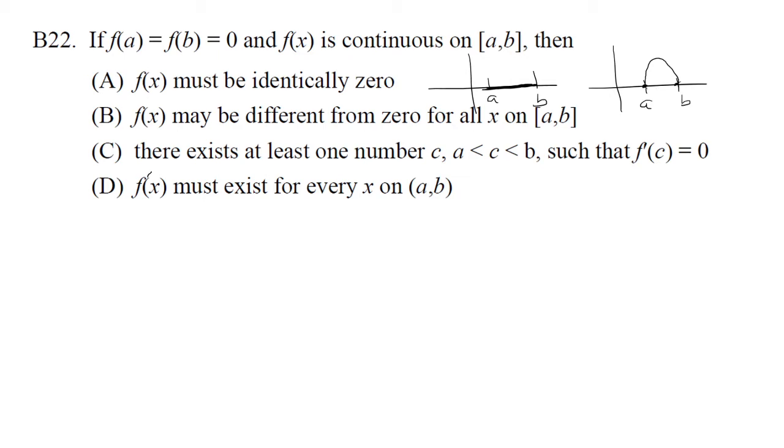Similarly, it could also go down and then back up. So it doesn't have to be identically zero. There are many ways it cannot be. The word must means there's only one condition where it has to be zero and we know that's wrong.